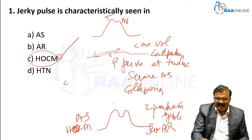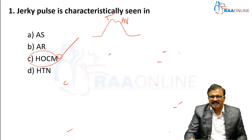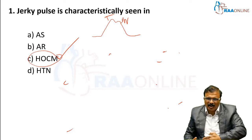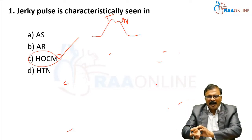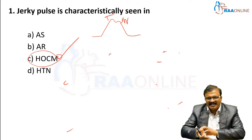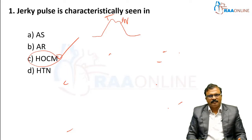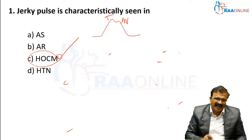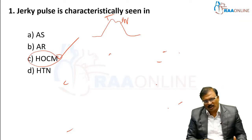Pulsus paradoxus cannot be drawn. It is an exaggerated decrease in systolic BP during inspiration. Clinically, by palpating the pulse during inspiration, the pulse is not felt — it is felt only during expiration. That is the classical feature of pulsus paradoxus.